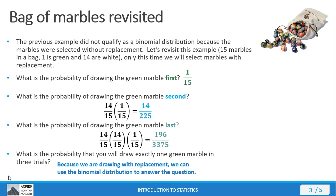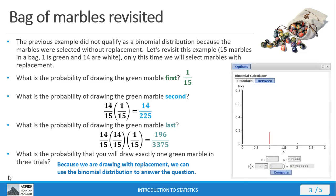The easiest way to do that is to use the calculator in StatCrunch. Here's our binomial calculator in StatCrunch. We put in the parameters for our problem: n = 3 trials, probability of success = 1/15. We want the probability of getting exactly 1 green marble in 3 trials, so we set it equal to 1, hit compute, and out comes our answer.